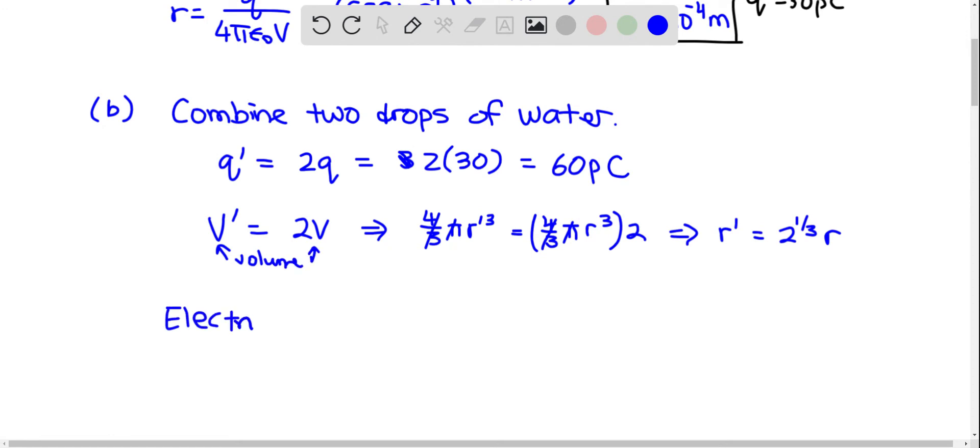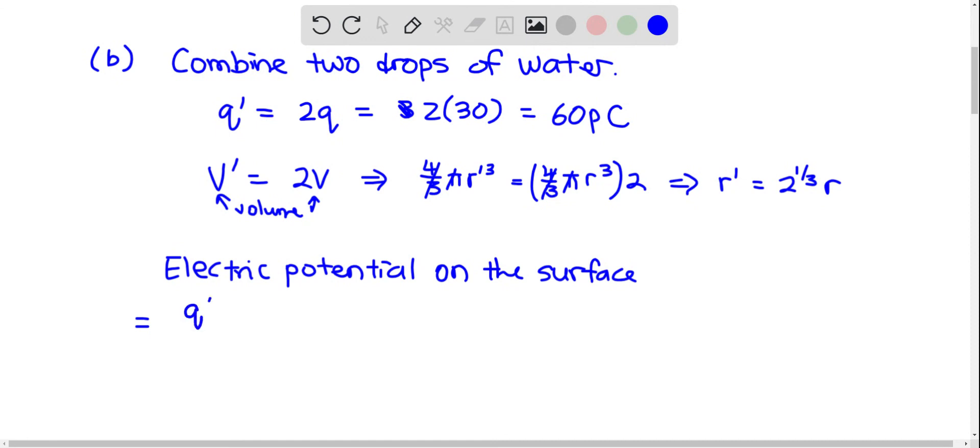Now electric potential on the surface is equal to q prime over 4 pi epsilon r prime. So this is 8.99 times 10 to the 9. Q prime is 60 picocoulombs. r prime is 2 to the one-third times r, which is 5.4 times 10 to the negative 4.